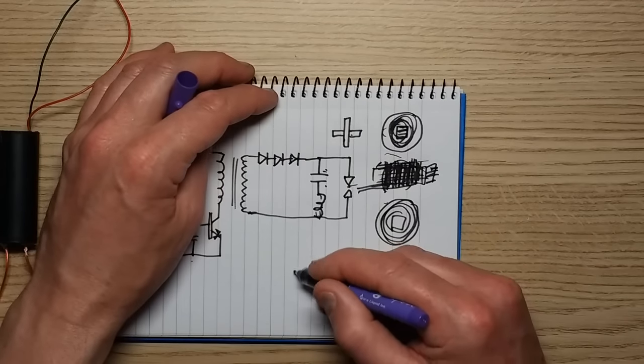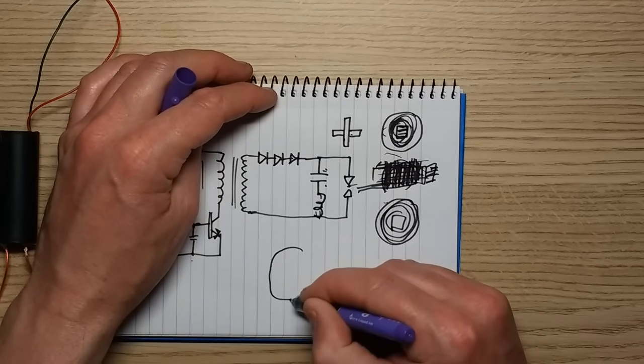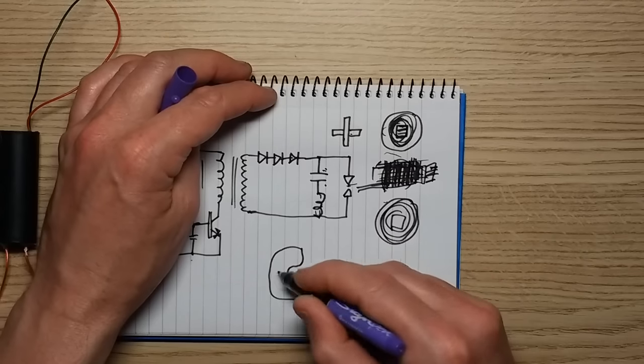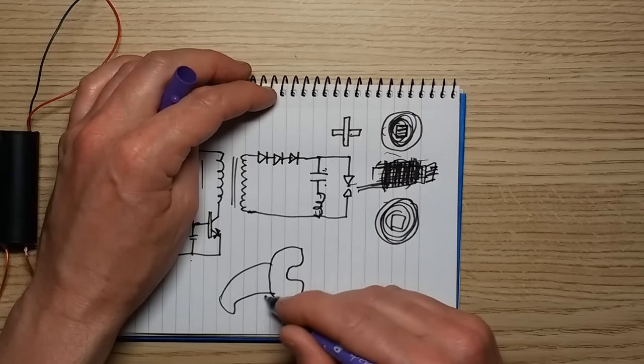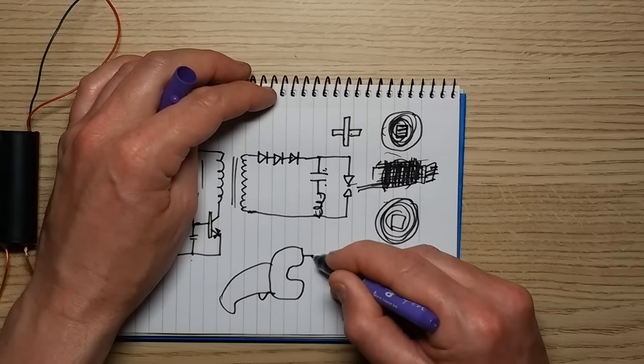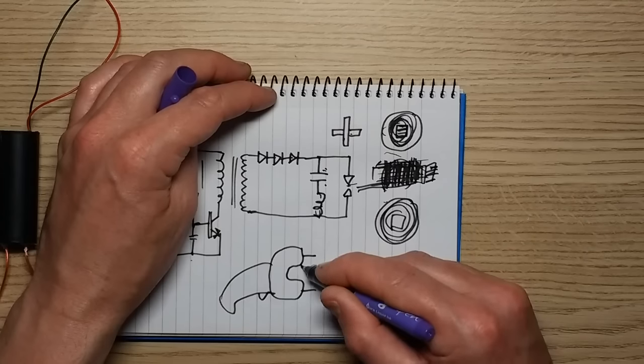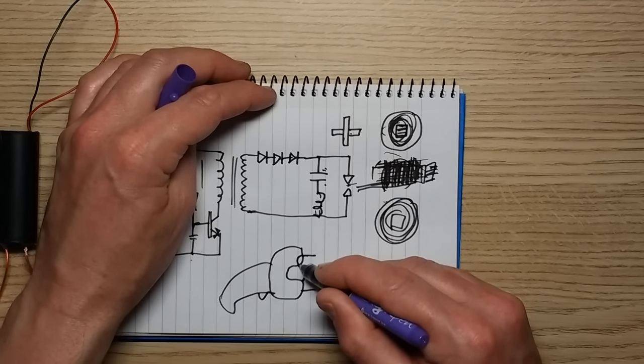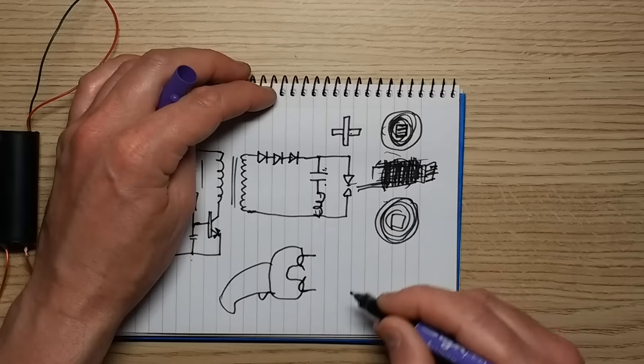The electrodes in a stun gun, typically the stylish stun gun looks like it's got this sort of body with the trigger, and then it's got the probes coming out the front, and then it's got two probes close to the middle that spark between them. These are usually just physically connected together as loops of metal.